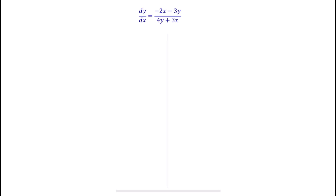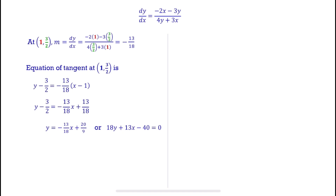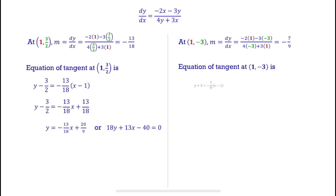Since we have two points, we find the equation of tangent one by one. For point (1, 3/2), the gradient of tangent is negative 13 over 18, then find the equation of tangent at this point. For point (1, negative 3), the gradient of tangent is negative 7 over 9, then find the equation of tangent at this point.